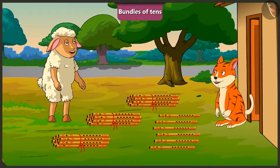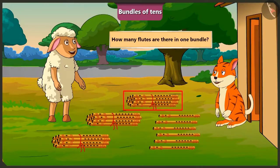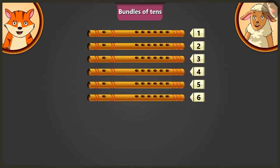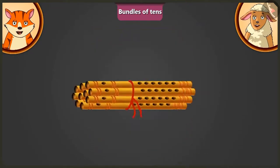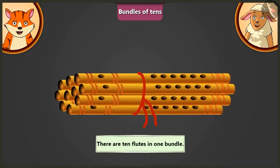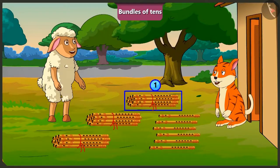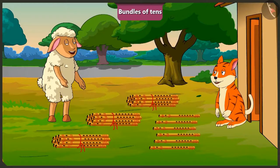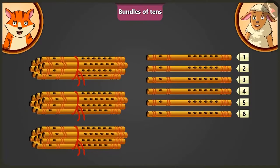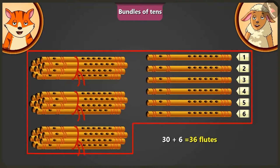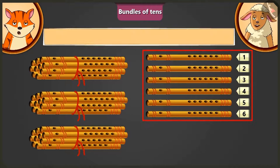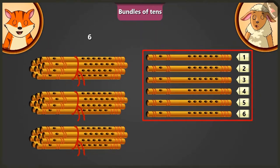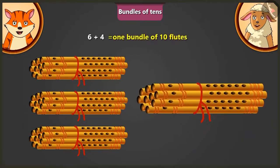Now they count flutes. One bundle has ten flutes: one, two, three, four, five, six, seven, eight, nine, ten. There are three bundles of flutes in total, so there are thirty flutes plus six loose ones — total thirty-six flutes. Adding four flutes to the six will make one more bundle of ten, giving four bundles total, meaning forty flutes.